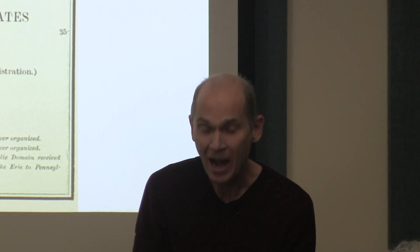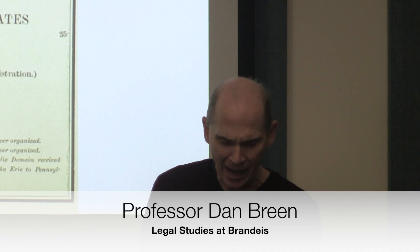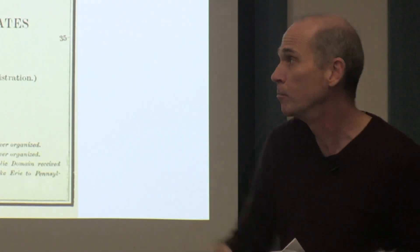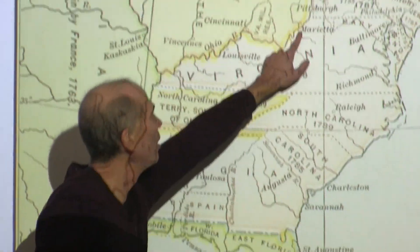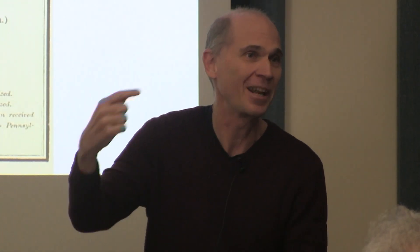Two years later, in 1788, Rufus Putnam gathered together 48 men and led them down to the Ohio, to the point where the Muskingum River joins the Ohio, at a place he called Marietta — the first town in the territory of Ohio settled by people of European and African ancestry. This is a good place to pause and ask: where does the name Marietta come from? Anyone know? It's named after Queen Marie Antoinette.